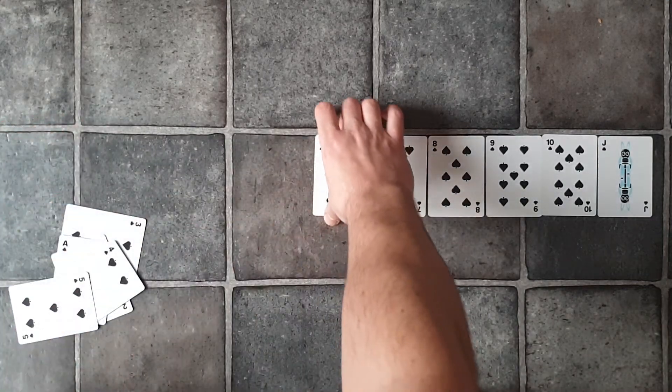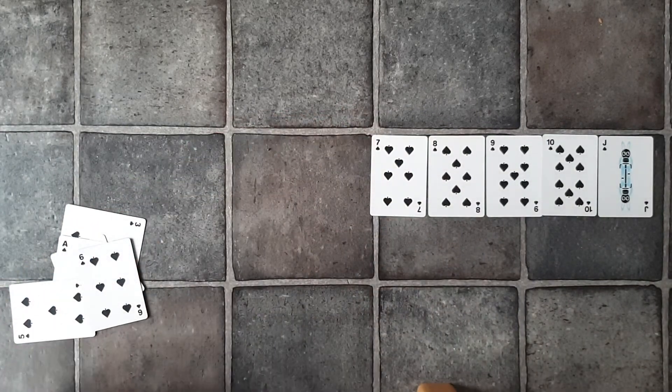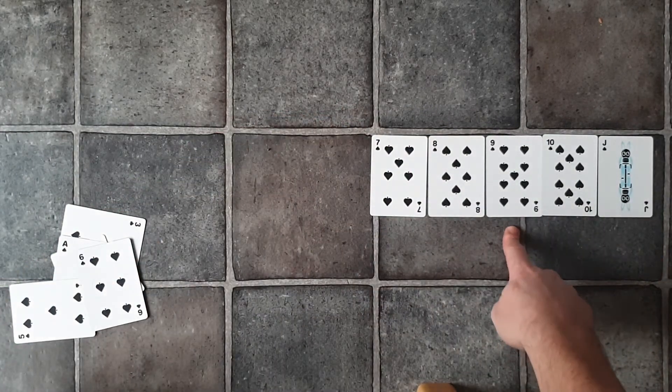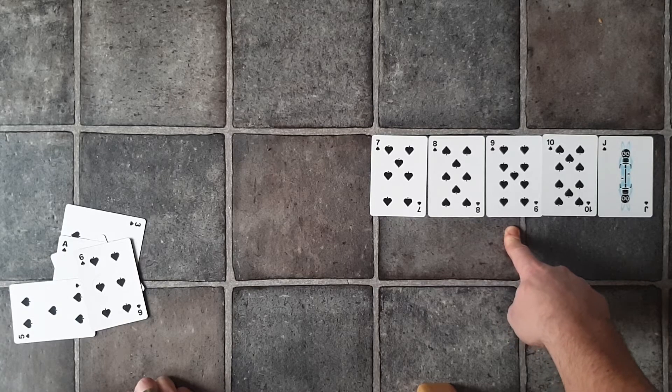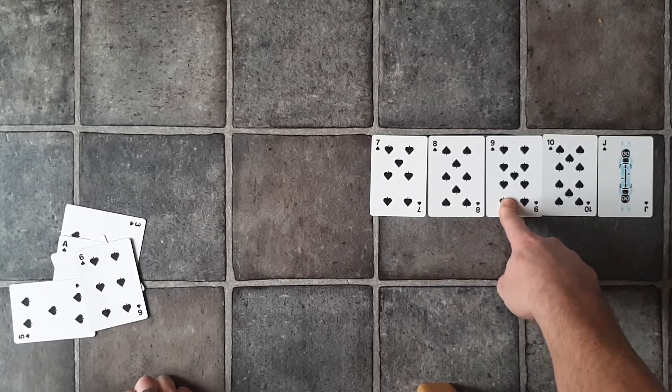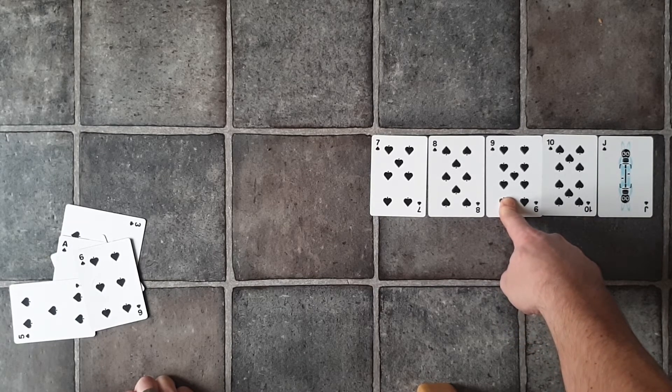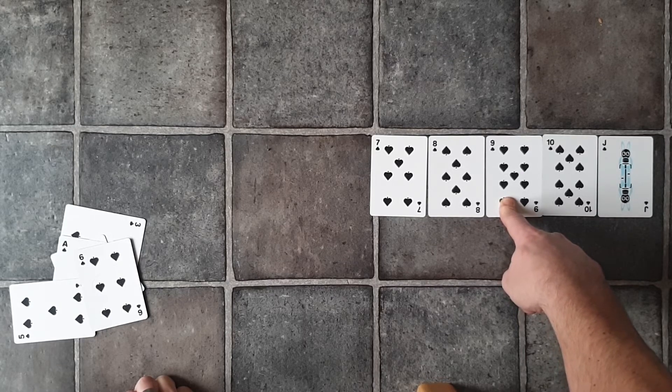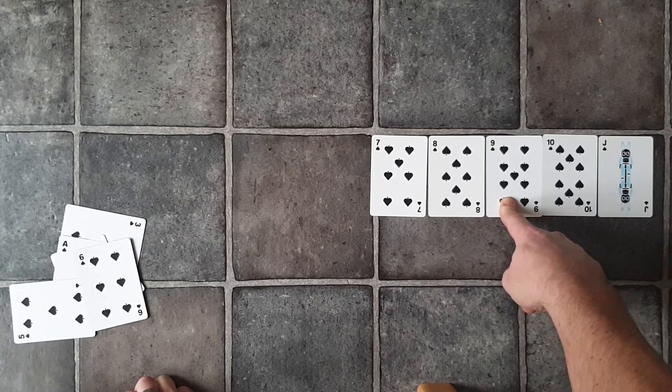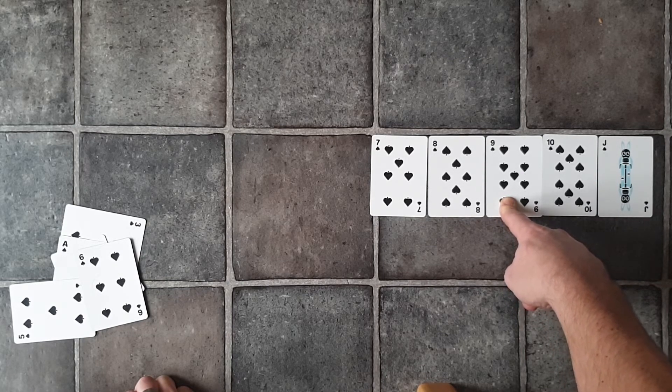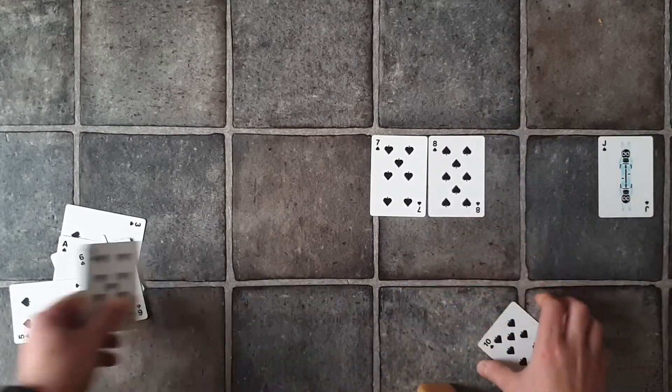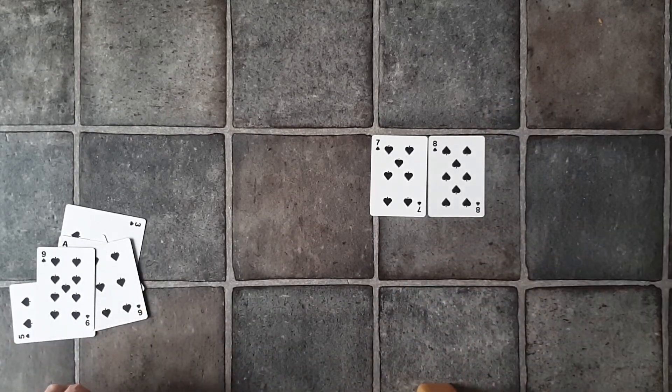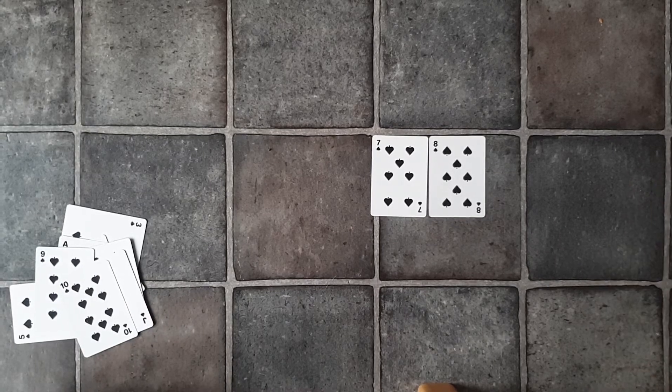We go back to our middle point, which happens to be nine. Is nine seven? No. Is seven before the card number nine? Yes. So we discard nine and everything above nine.